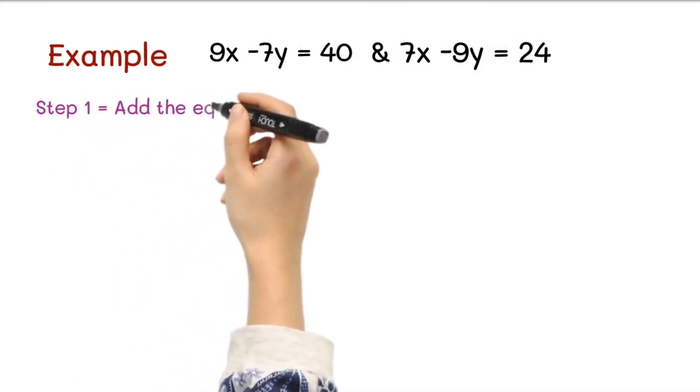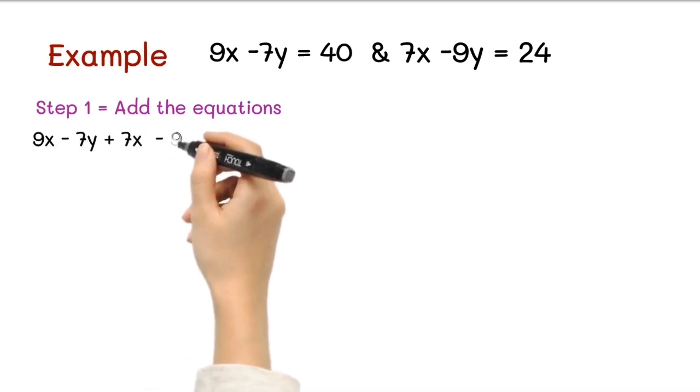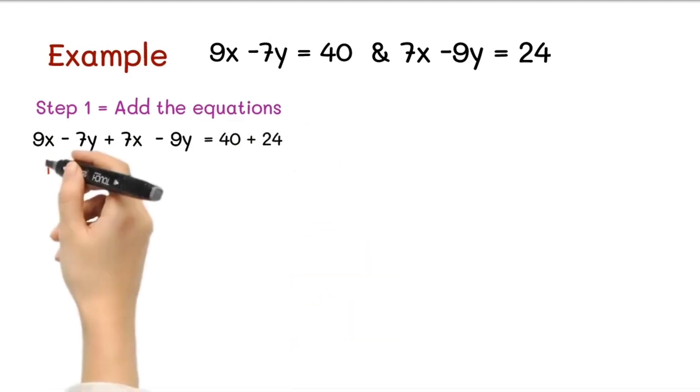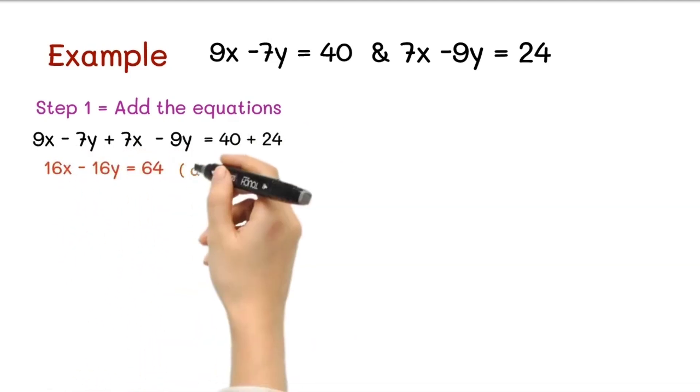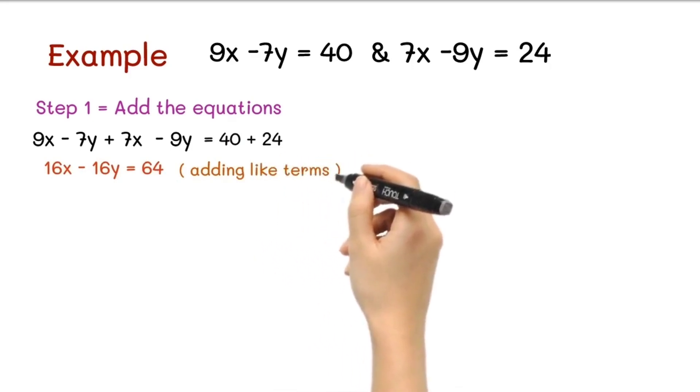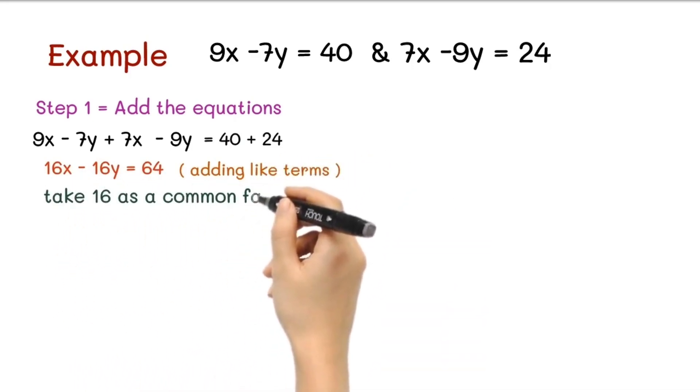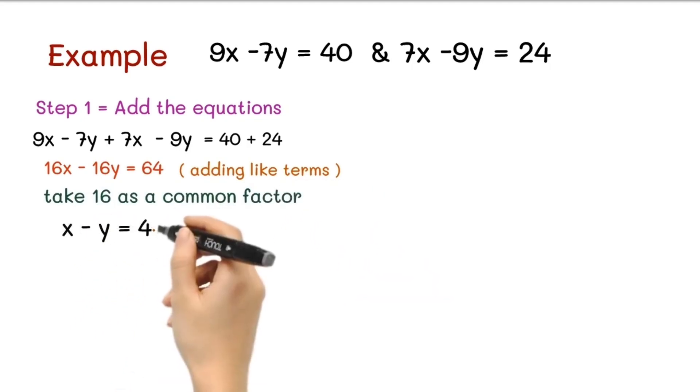According to the sutra, in the first step we need to add both equations together. By adding the equations we get 9x - 7y + 7x - 9y = 40 + 24, that is 16x - 16y = 64 by adding like terms. If we take 16 as a common factor from both sides, then we get x - y = 4, and this is our equation 1.